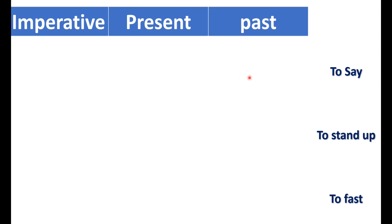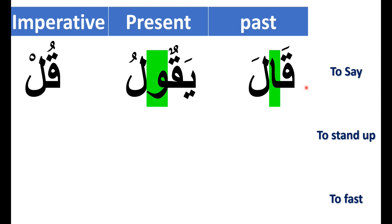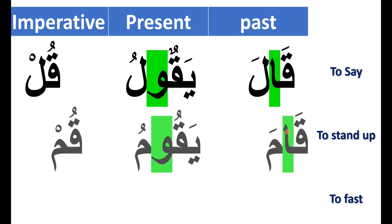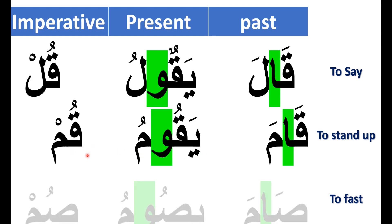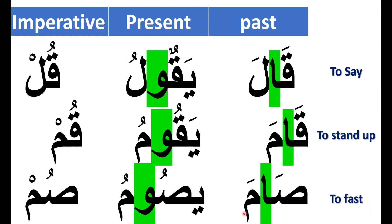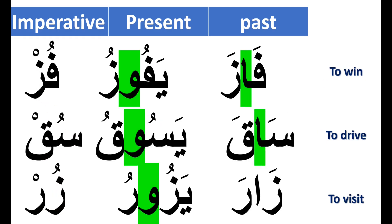I will give you ten examples of weak verbs that carry Alif in the middle. Let's begin with the verb to say. In the past tense: قال, he said. In the present tense: يقول, he says. In the imperative tense: قل, say. To stand up: قام, he stood up; يقوم, he stands up; قم, stand up. To fast: صام, he fasted; يصوم, he fasts. As you notice, the Alif in the verbs is replaced by Waaw in the present tense, and the verbs completely lose their Alif in the imperative tense.